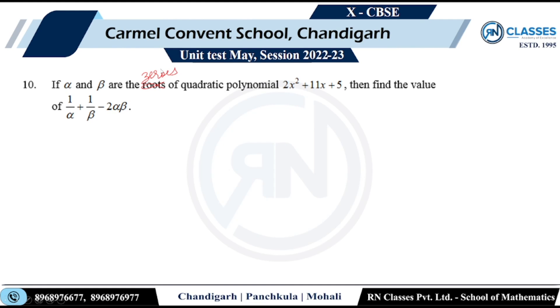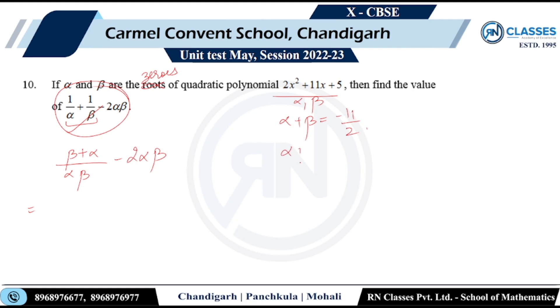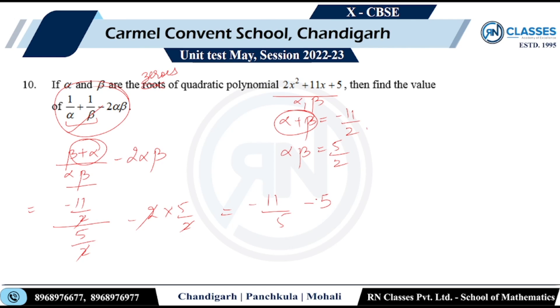Question ten: if α and β are zeros of the quadratic polynomial 2x² + 11x + 5... wait, the polynomial has sum of zeros α + β = −11/2 and product αβ = 5/2. Simplifying the given expression: (β + αβ) / (αβ − 2α) = (α + β) / (αβ) − 2 = (−11/2) / (5/2) − 5 = −11/5 − 25/5 = −36/5.